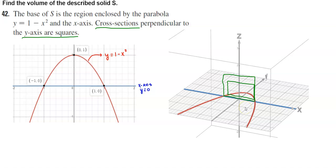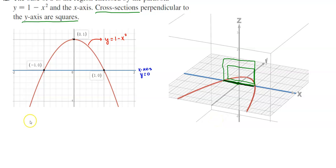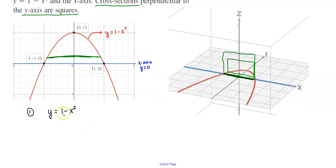Now take a look at the base. There are two bases — two sides. If you look at the center, you'll see there are two. We have the function y equals 1 minus x squared, and we're taking the cross section according to the y-axis. The cross section of the square goes in this direction, which is why we're working with respect to the y-axis.